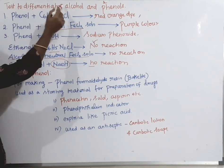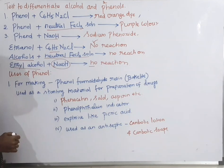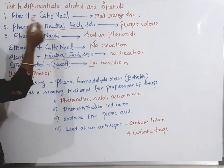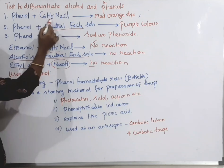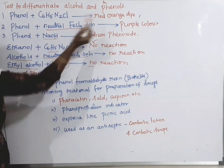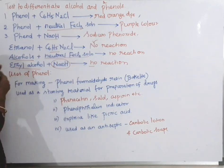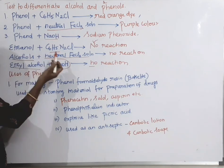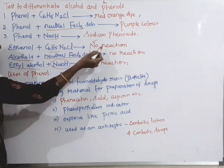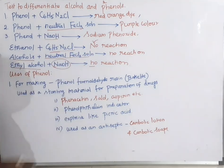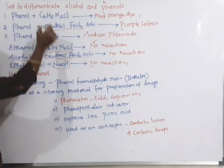The first test used for differentiating alcohols and phenols: phenol reacts with benzene diazonium chloride and gives a red-orange dye, but ethanol does not give any coloration with benzene diazonium chloride.